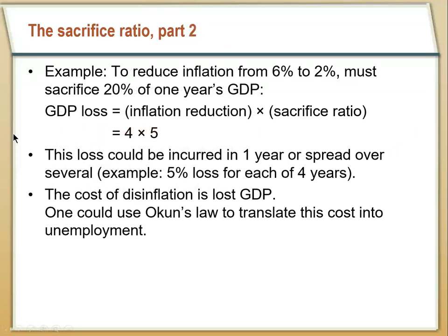For example, let's say that inflation is above the Fed's target — say inflation is six percent and the Fed wants it at two percent. That means to get inflation back down to two percent, we're going to have to sacrifice 20 percent of GDP. That's the difference between inflation and its target times the sacrifice ratio.